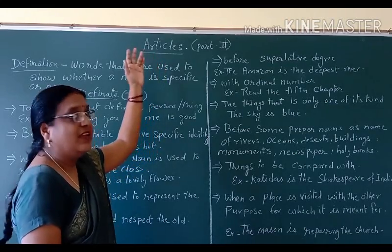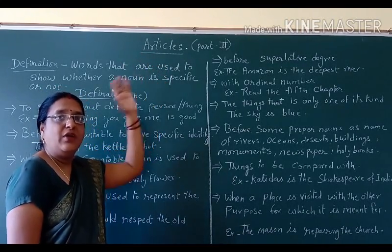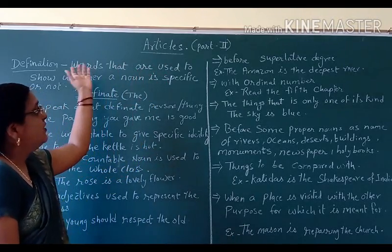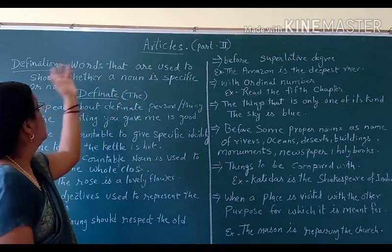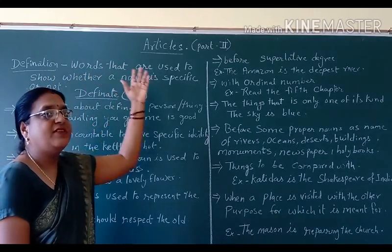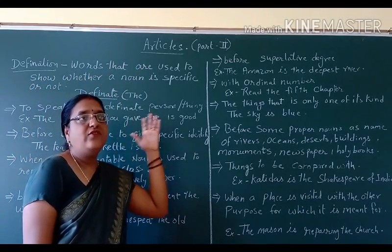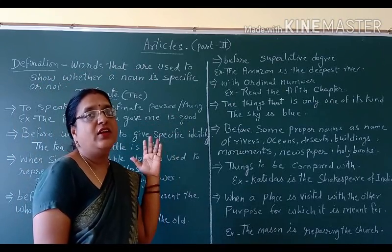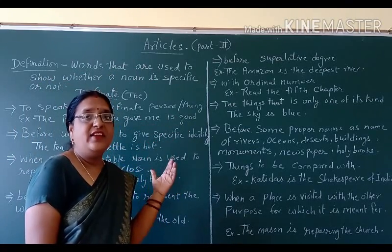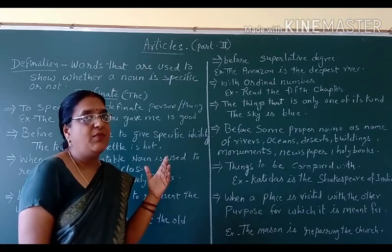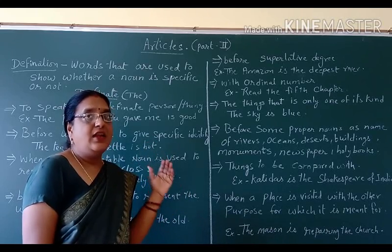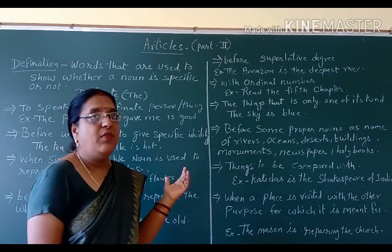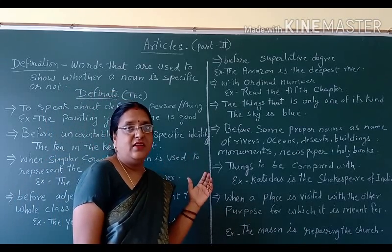Which articles? In the last video I have told you about articles — what are articles. Articles are the words that are used to show whether a noun is specific or not. We have to identify a noun as specific or non-specific. If it is specific, then we are talking about a definite article, and if it is non-specific, then we are talking about an indefinite article.